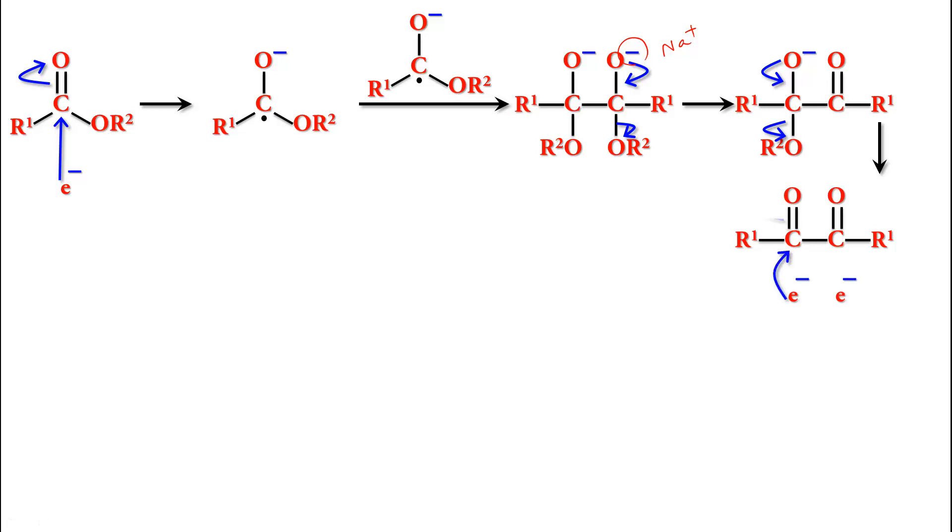Now we're going to get two more electrons attacking the two carbon atoms one by one. I'm showing them together, this happens one by one. And we get a dianion and a diradical. The two unpaired electrons are going to combine, the two radicals are going to combine to form a double bond.